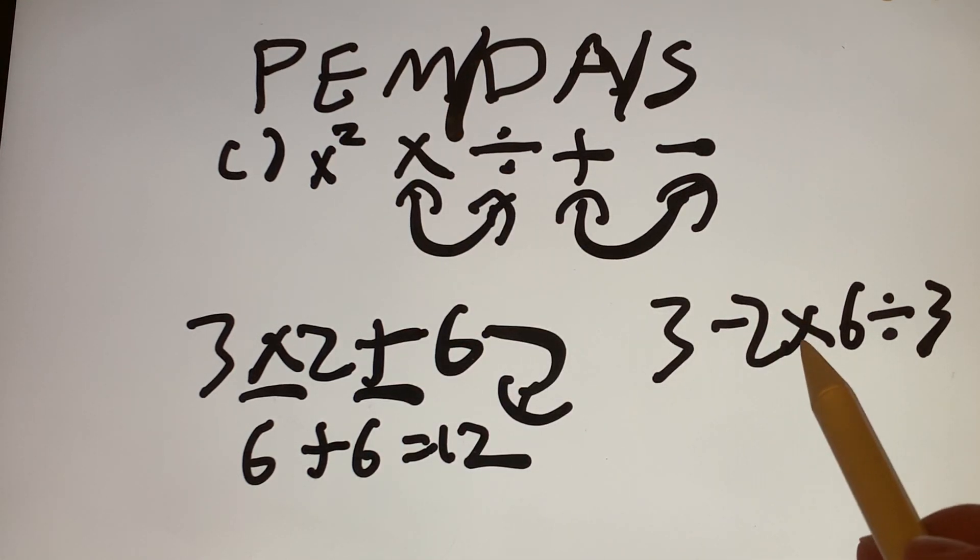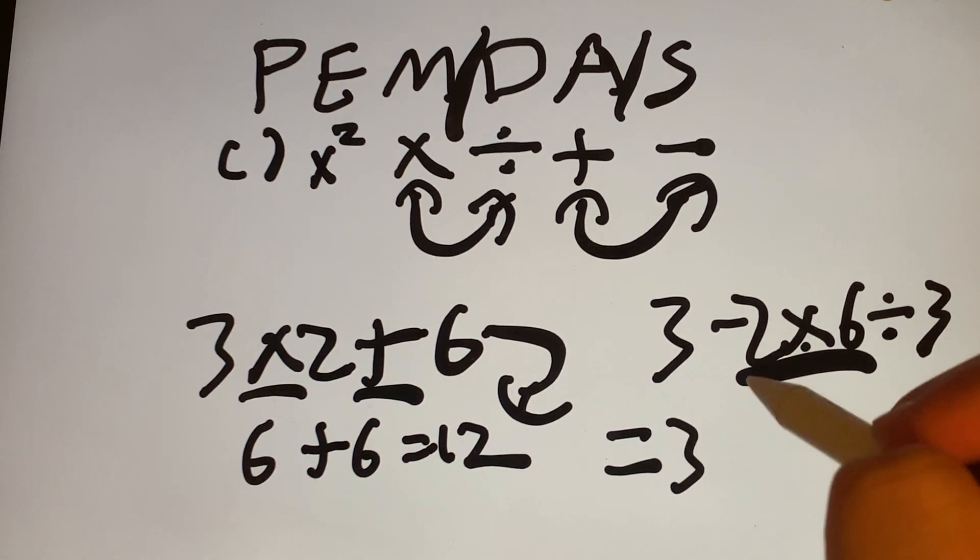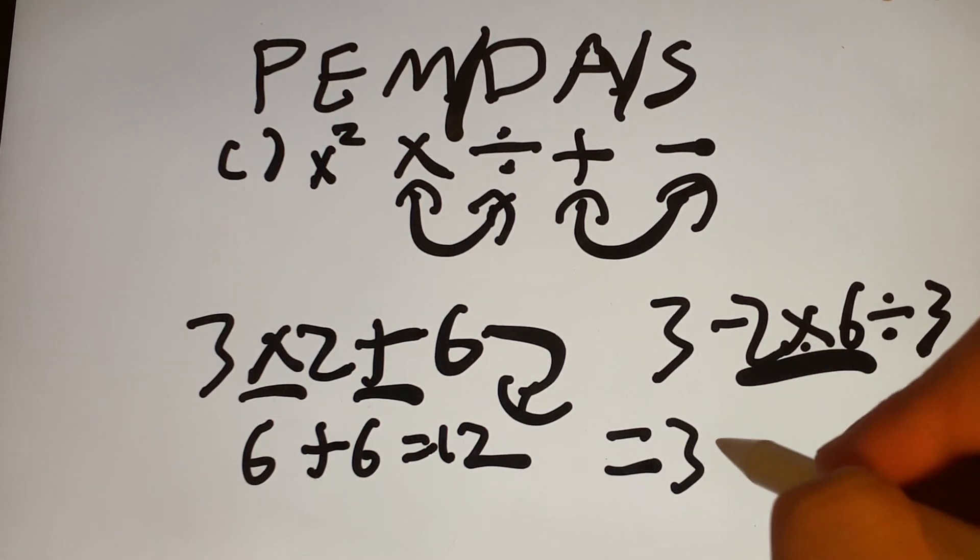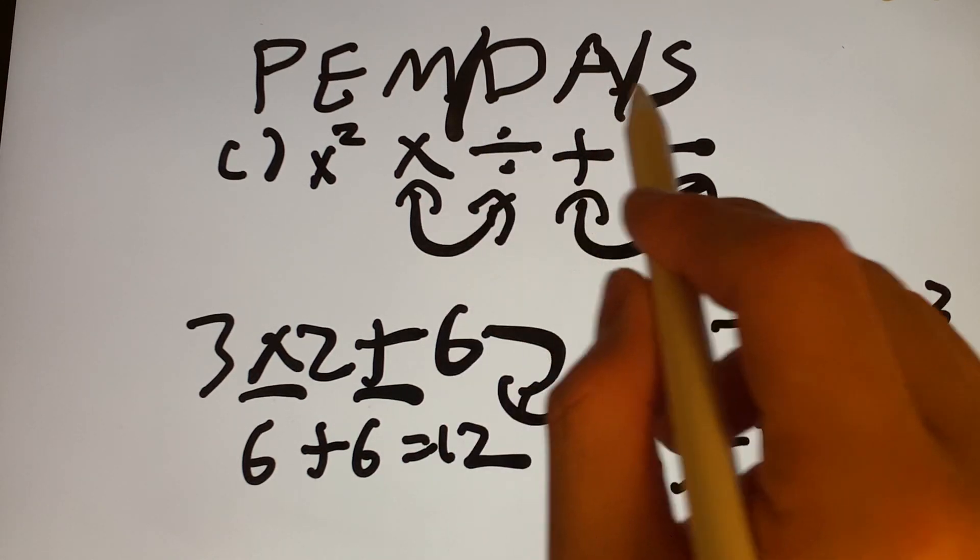So I see division and multiplication. But multiplication comes first. So we have to do this first. So this becomes 3 negative 2 times 6 gives us negative 12 divided by 3. Now we do division, because division comes before subtraction.